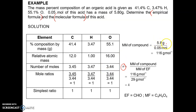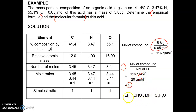We calculate: 5.8 grams divided by 0.05 grams gives 116 grams per mole. The molar mass from the empirical formula is 29 g/mol. Dividing these two values (canceling units) gives N = 4. Therefore, the molecular formula is C₄H₄O₄.